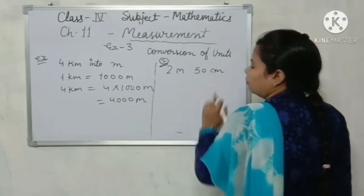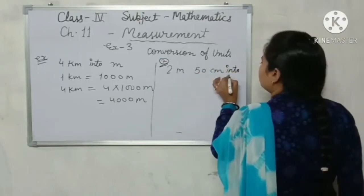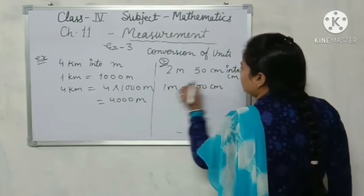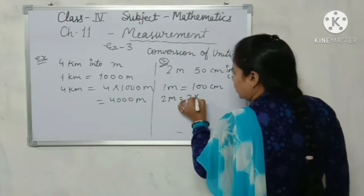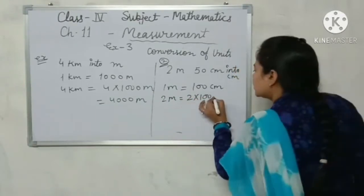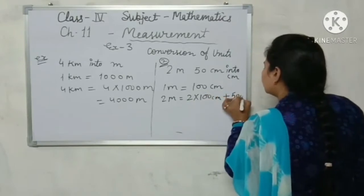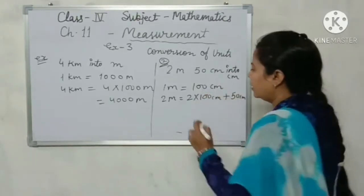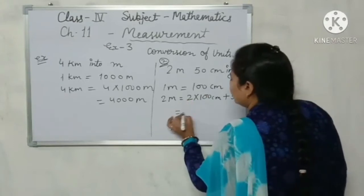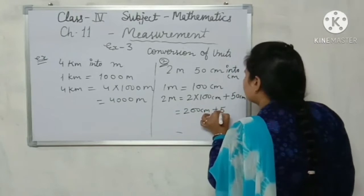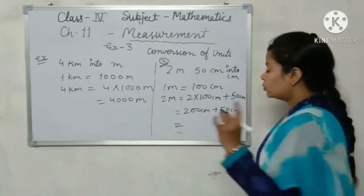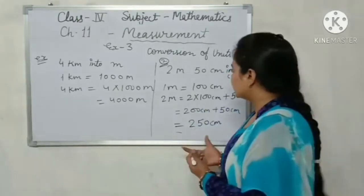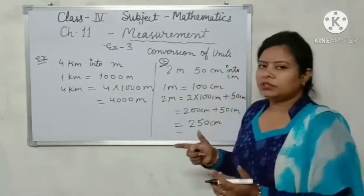See, this is done. Next example: 2 meter 50 centimeter into centimeter. As you know, 1 meter equals 100 centimeters. So 2 meters equals 2 into 100 centimeters plus 50 centimeters, which gives 250 centimeters.